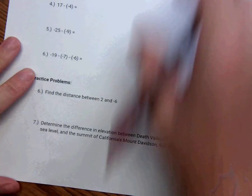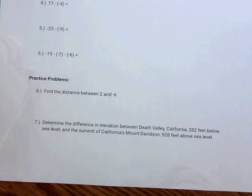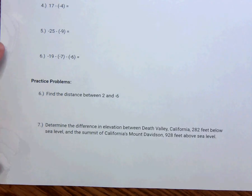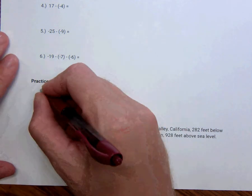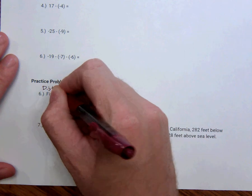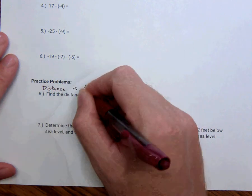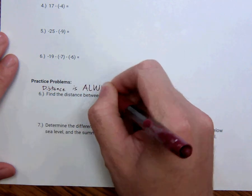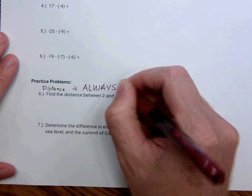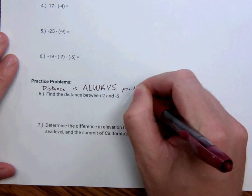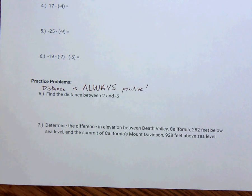So distance. We want to find the distance between. Now remember, distance is like absolute value. The distance is always going to be a positive number. So remember, distance is always positive. Always.